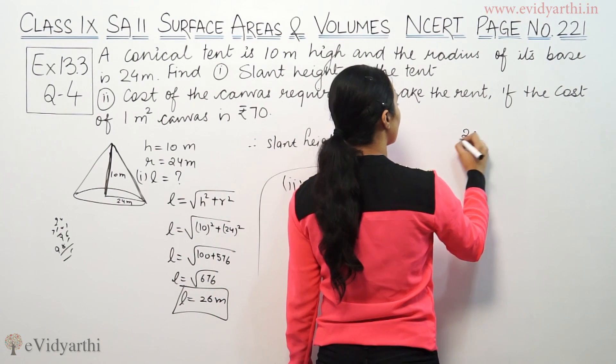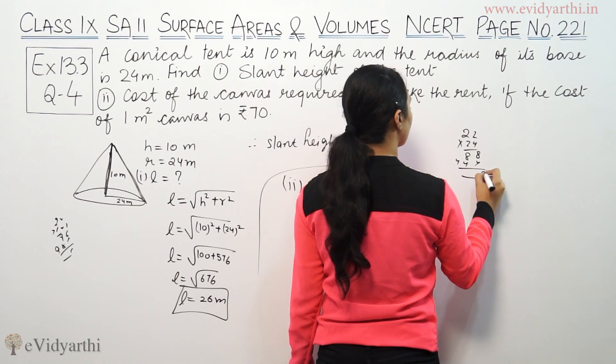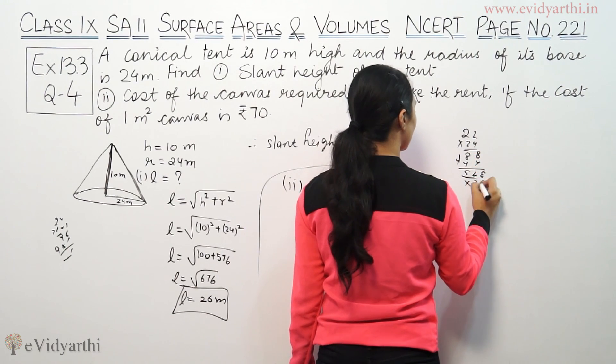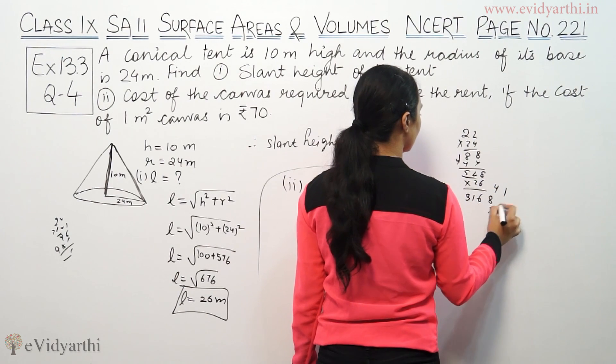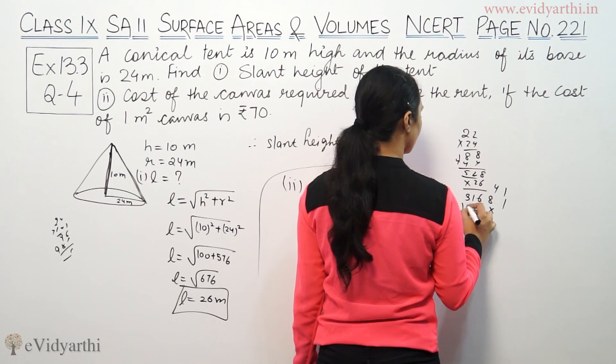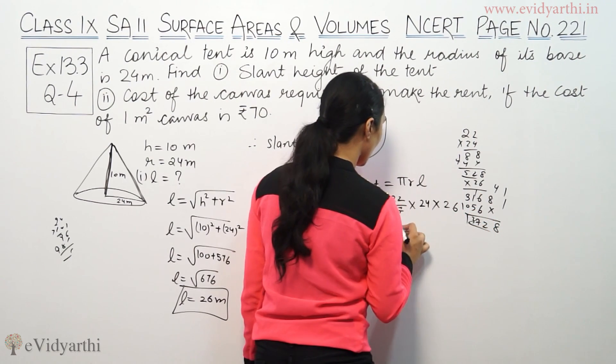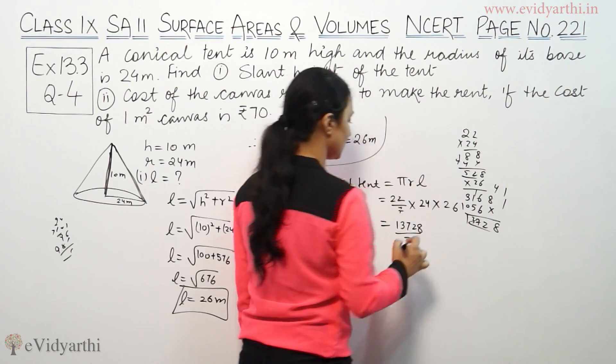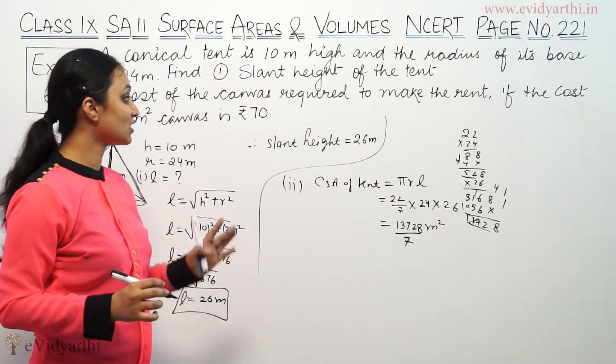22 into 24 equals 528, then 528 into 26 equals 13,728 divided by 7, which gives us the area in meter square.